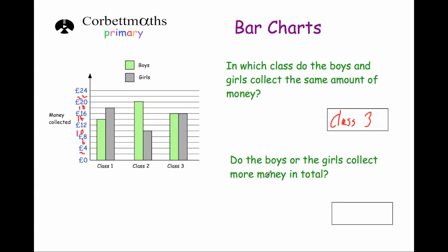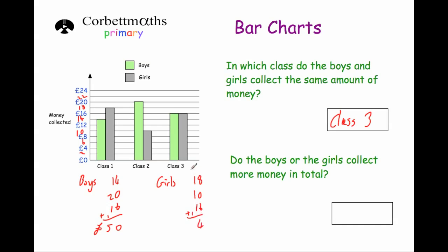Do the boys or girls collect more money in total? We add together the amounts for boys in class 1, 2 and 3: £14, £20 and £16. For the girls: class 1 is £18, class 2 is £10 and class 3 is £16. Boys total: 4 plus 0 plus 6 is 10, carry 1; 1 plus 2 plus 1 plus 1 is 5 — so the boys collected £50. Girls total: 8 plus 0 plus 6 is 14, carry 1; 1 plus 1 plus 1 plus 1 is 4 — so the girls collected £44. The boys collected more money in total.